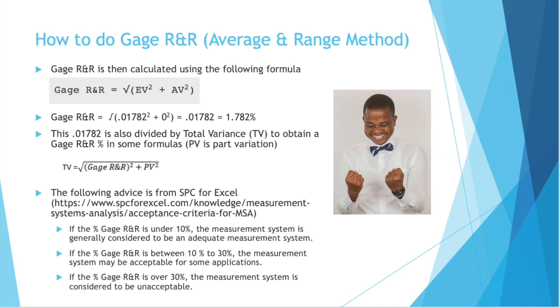Based on the following advice from SPC for Excel, if your gauge R&R percent is under 10 percent, your measurement system is generally considered to be adequate. Between 10 and 30 percent, the measurement system may be acceptable for some applications, but not others. If it's over 30 percent, the measurement system is considered to be unacceptable.